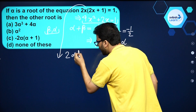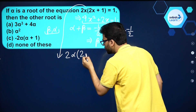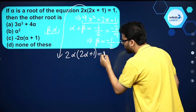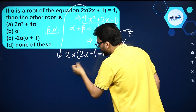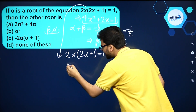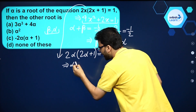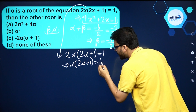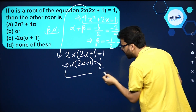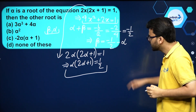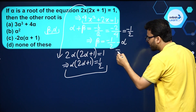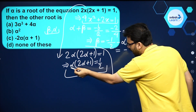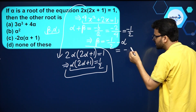Substituting alpha: 2α(2α + 1) = 1, which gives us α(2α + 1) = 1/2. Now, opening up the bracket of the original equation 2x(2x + 1) = 1 gives 4x² + 2x = 1. In place of 1/2, we can write α(2α + 1).